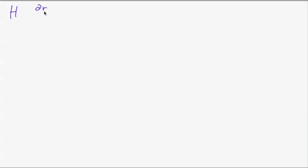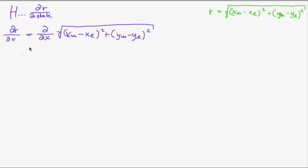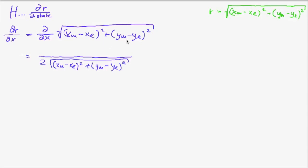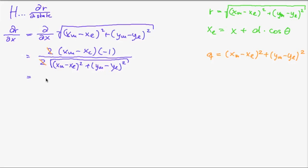Now we compute the Jacobian matrix H, similarly to what we did for g. Taking the partial derivative of r with respect to x: we differentiate the square root, giving 1/(2*sqrt) times the inner derivative. Since xl equals x plus d*cos(theta), the derivative of minus xl with respect to x is minus 1, which cancels. Introducing q as the term under the square root, the derivative is minus (xm minus xl) divided by sqrt(q). Similarly, the derivative with respect to y is minus (ym minus yl) divided by sqrt(q).